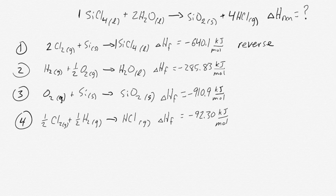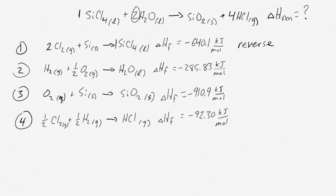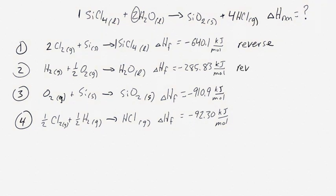If we look at our second equation, we look at water. In our overall reaction, we have two waters on the reactant side, and in our individual equation, we have one water on the product side. So we have to reverse that reaction to get it in the right place, and we have to double it to get the right amount. That means reversing the sign to make the delta H positive, and we need to double it as well. So we have to reverse and double that equation.